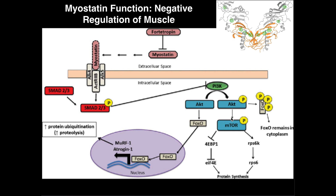mTOR is the master regulator of muscle protein synthesis, or just protein synthesis in general. So if you activate mTOR, you're going to get protein synthesis. So that's the case of what we see when we want muscle protein synthesis: PI3K is active, it phosphorylates AKT making it active, then activated AKT phosphorylates FOXO causing it to remain in the cytoplasm, and then activated AKT phosphorylates mTOR, activating mTOR, leading to muscle protein synthesis.